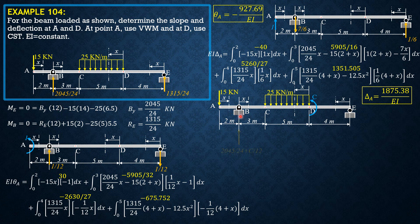The reaction at B becomes 2045/24 + C/12, and the reaction at E becomes 1315/24 − C/12. Using the same sectioning, EI·θ_D equals the integral from 0 to 2 of −15x times 0 dx — the partial derivative of −15x with respect to the couple C is zero, so there is no C in that section.